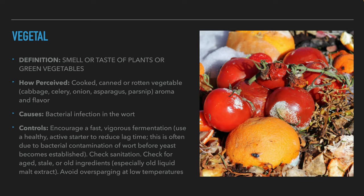Now to the flavor and aroma of rotten vegetables. We perceive it as the aroma of cooked, canned, or rotten vegetables — think of it like cabbage, celery, onions, asparagus, or white carrots. This is most often caused by bacterial contamination or as a result of residual hydrogen sulfide that has broken down into other smelly compounds. This is not acceptable in any beer. To avoid this, the brewer should encourage fast and good fermentation by using healthy yeast in sufficient quantity with enough nutrients and oxygen. In some cases, this aroma can be caused by an infection that works before the yeast starts working, so a starter can help to introduce yeast that is already working into the beer. Check sanitation procedures for contamination and check the ingredients to make sure that they are not old or moldy, and finally avoid over sparging at low temperatures.